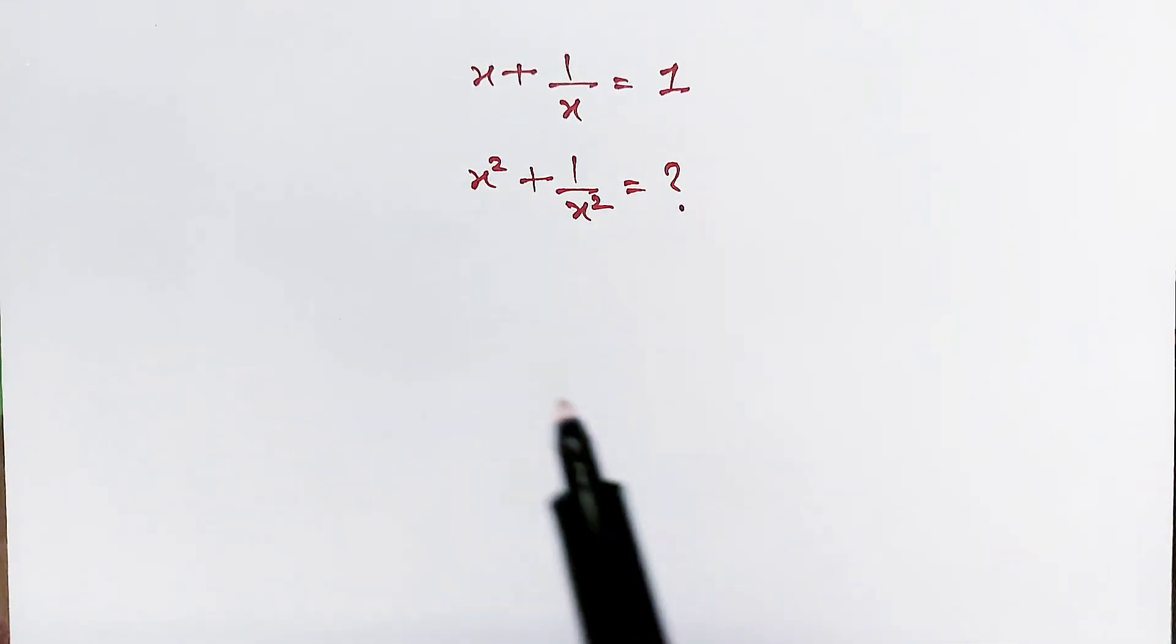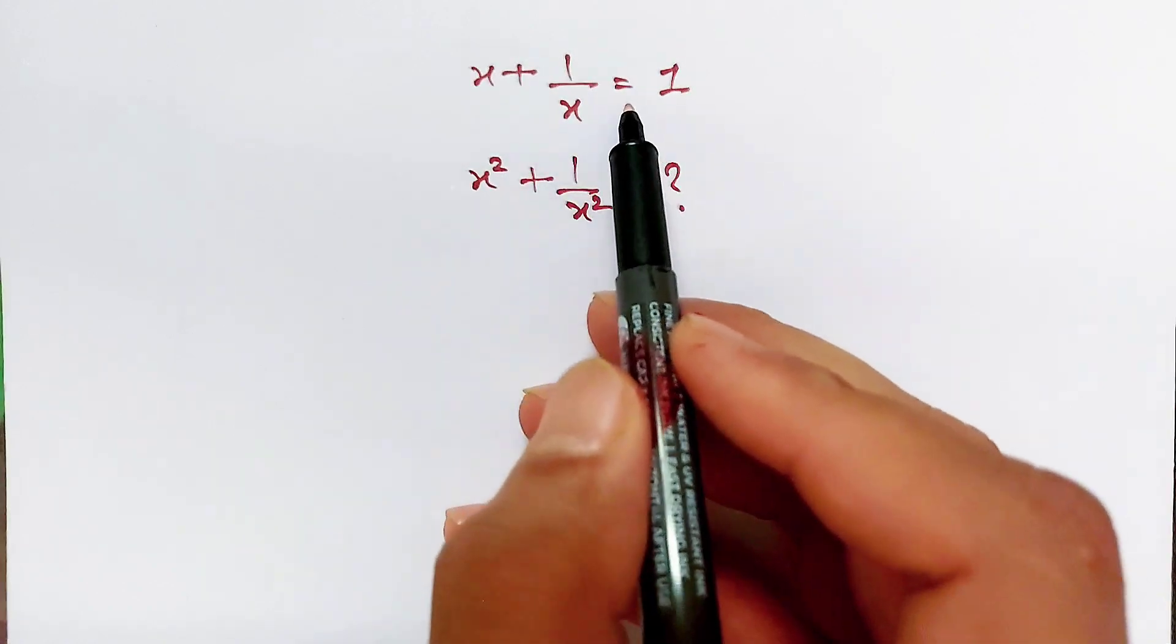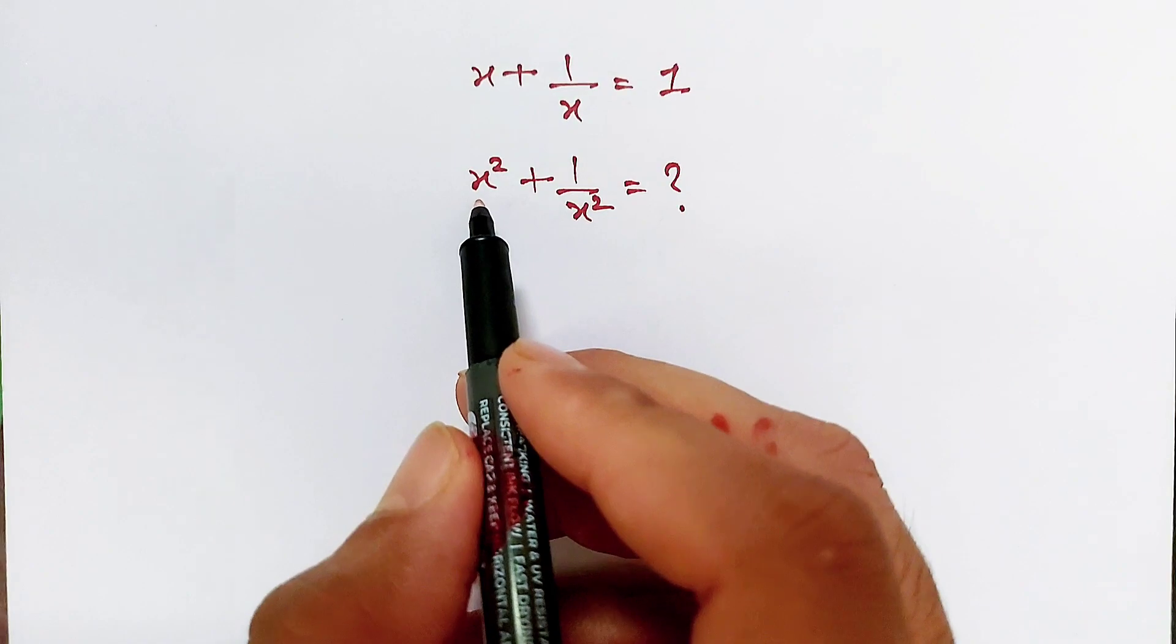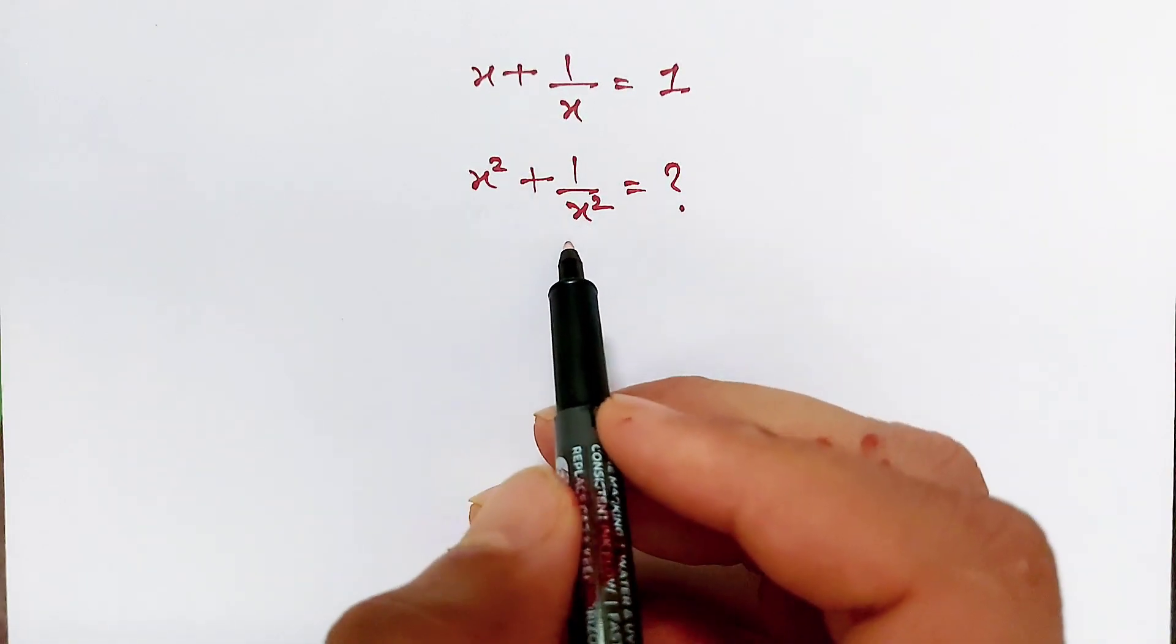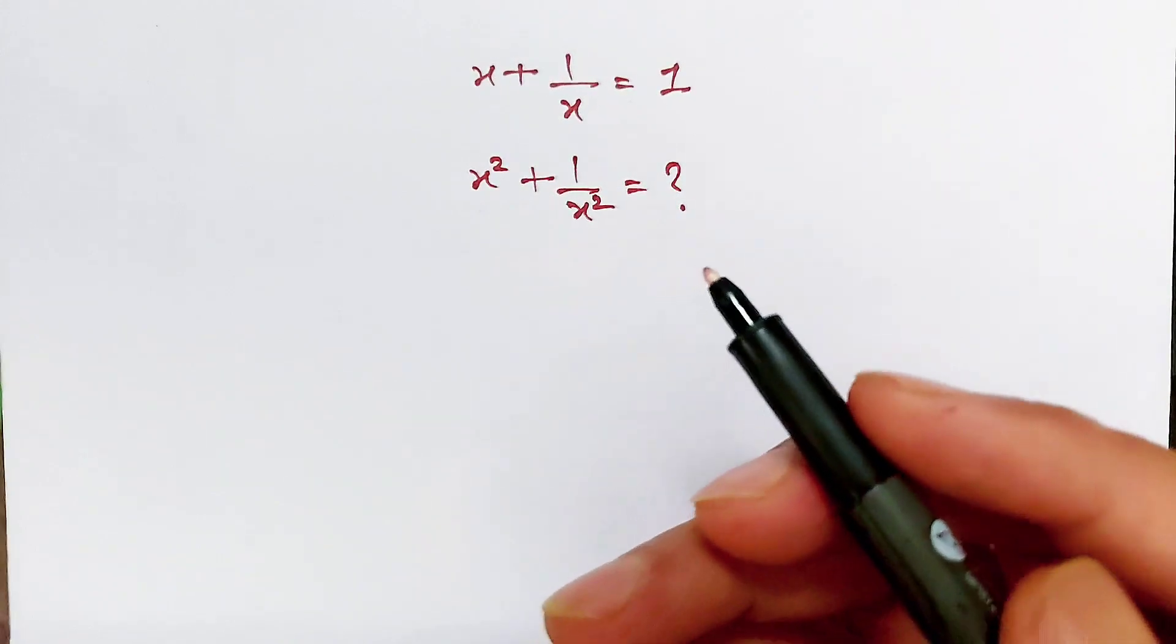Hello dosto, the question is: x plus 1 over x equals 1, and we have to find the value of x square plus 1 over x square. Let's find out.